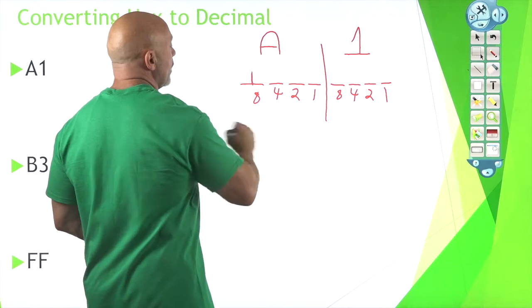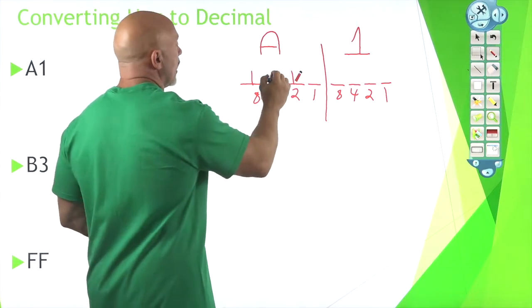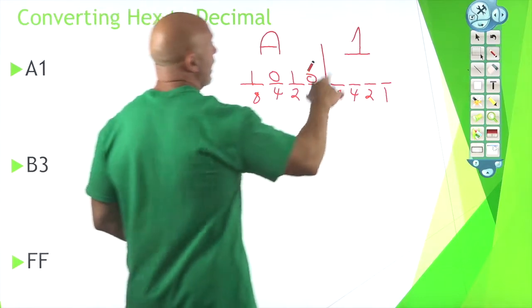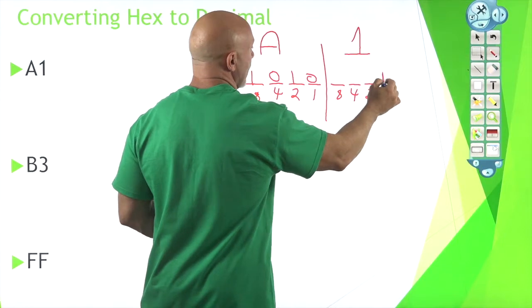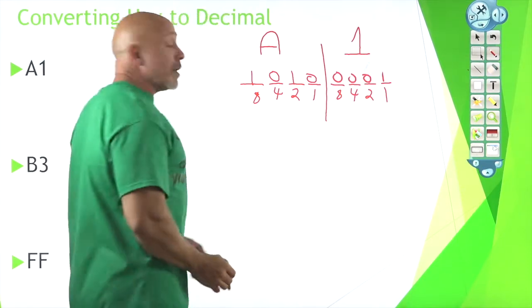All right, so we turn on the eight and we turn on the two. That's eight and two is ten. There you go, zero, zero. All right, then we have one. Well that's pretty simple. We turn that one on, zero, zero, zero. Well, there's your binary.